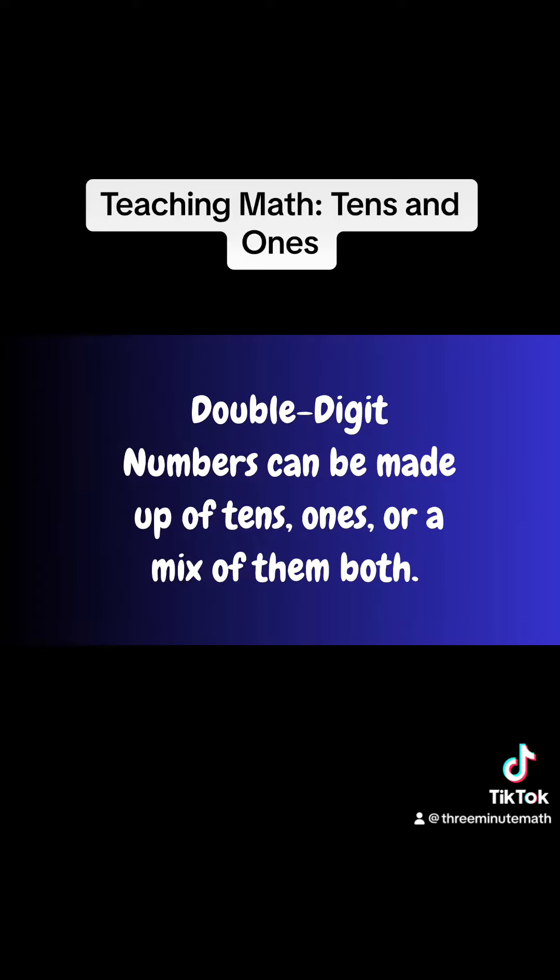A double digit number can be made up of tens, ones, or a mix of them both.